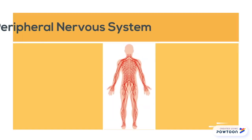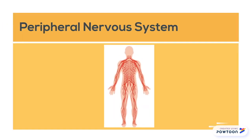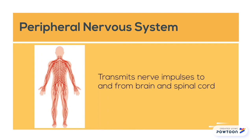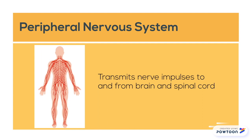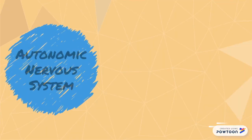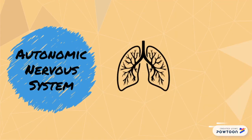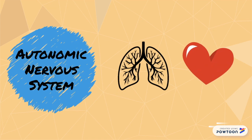The peripheral nervous system contains the sensory and motor nerves. It transmits nerve impulses to and from the brain and spinal cord. The PNS includes the autonomic nervous system, which contains motor neurons and controls involuntary movement.